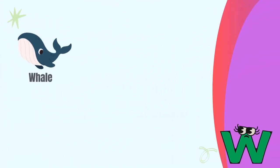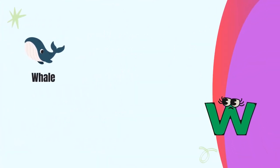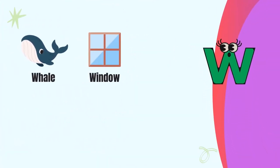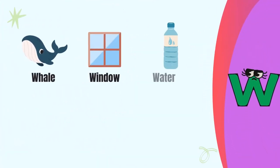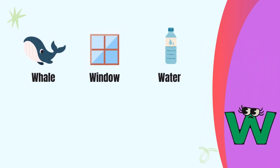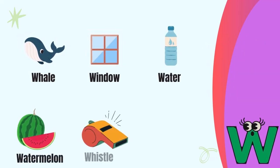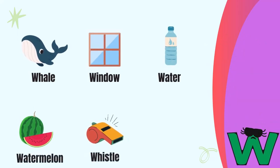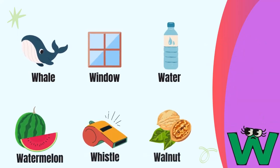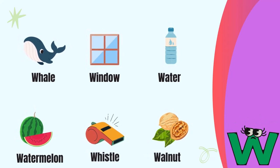Letter W. W for whale, W for window, W for water, W for watermelon, W for whistle, W for walnut.